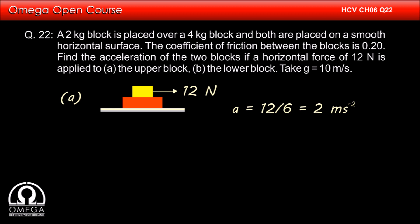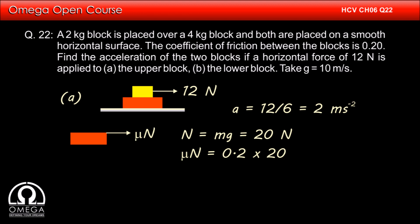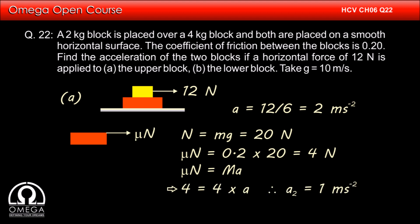Now let us check if the maximum possible acceleration of the lower block can match this value. If we make the free body diagram of the lower block, the only force acting on it in the horizontal direction is friction from the upper block. Since the mass of the upper block is 2 kg, the normal force at the contact surface is 20 N. The maximum friction between the two blocks is mu times normal, that is 0.2 × 20 = 4 N. The mass of the lower block is 4 kg and a maximum of 4 N force is acting on it, so the maximum acceleration with which it can move is 1 m/s². Since the common acceleration of the blocks is more than this value, the blocks cannot move together.